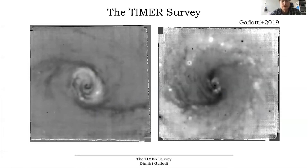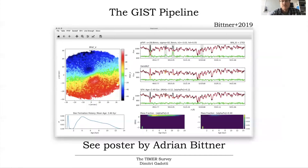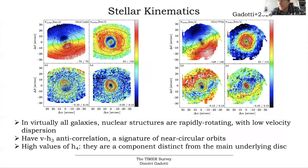Here are color maps from the same reconstructed images, highlighting again the dust lanes of the gas being pushed towards the center and forming this structure constituted of relatively new stars. To study all the millions of spectra we got from the TIMER survey, we developed the GIST pipeline, which has a fantastic graphical interface where you can see the results of the spectral analysis. This was developed by Adrian Bittner, who has a poster here about it.